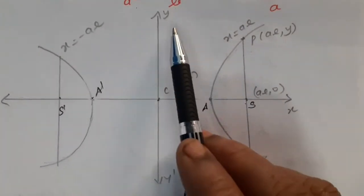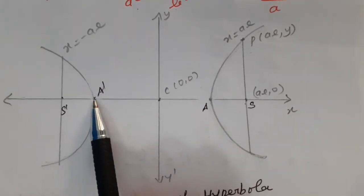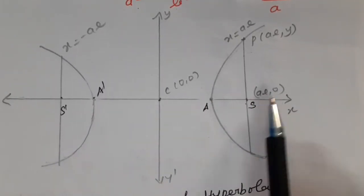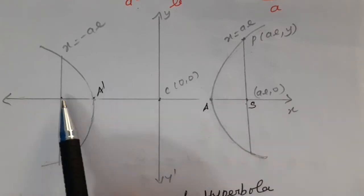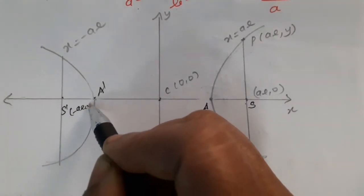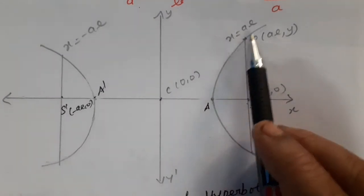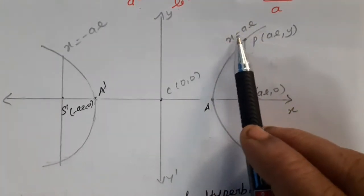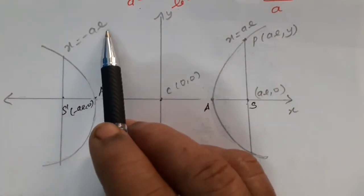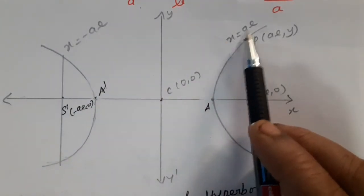The vertices are A and A dash. S is the focus at (ae, 0), and S dash is at (−ae, 0). The equation of the latus rectum is x = ae and x = −ae.